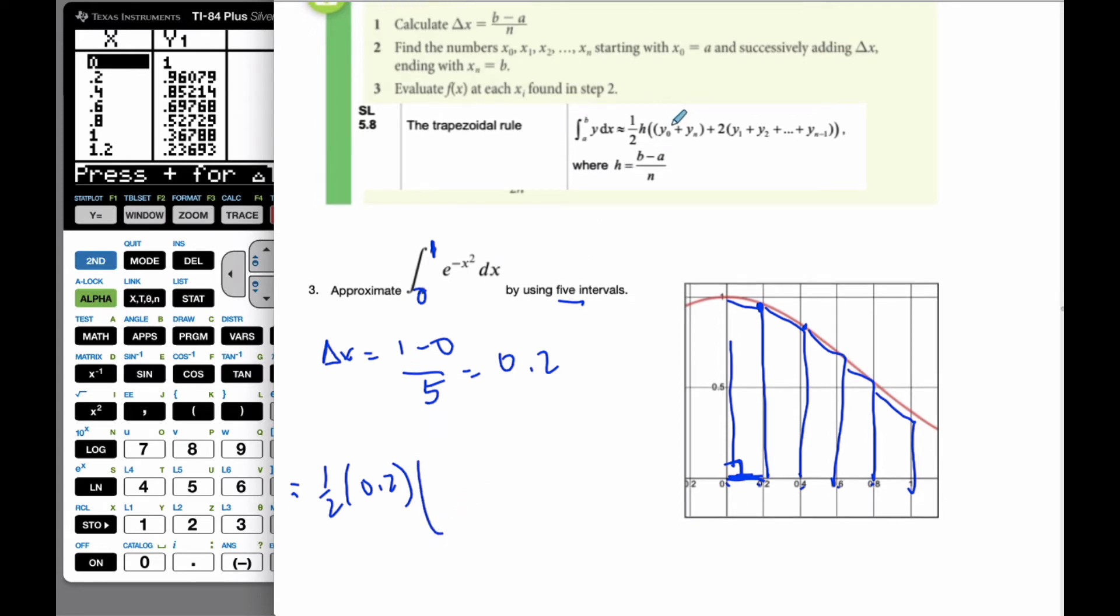Times, well, y0 is the first value, and the first value here is - sorry, the y value. It's when the x - sorry. It's when my x-coordinate is 0. What's the y-value? Well, the x-coordinate is 0. My y-value is 1. Plus, my last value, when my x-value is 1, my y-value is 0.36788.